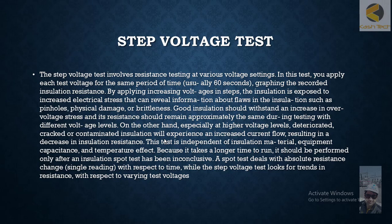Let's discuss a new type of testing method to test insulation resistance, called the step voltage testing method. In this method, step voltage tests involve resistance testing at various voltage settings. We apply 500 volts and take the insulation resistance, then apply 1 kV, then 2 kV, and so on. This is also part of maintenance testing. Each test voltage is applied for the same period of time, for example 60 seconds, dropping the recorded insulation resistance by applying increasing voltages in steps.